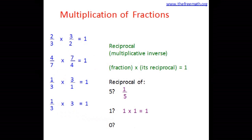Now how about 0? What is the reciprocal of 0? Is there any number that I can multiply with 0 and get the answer 1? No, because 0 multiplied by any number is 0. So you cannot find a number that gives a product of 1. Therefore, 0 has no reciprocal, or we can say it does not have a multiplicative inverse.